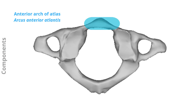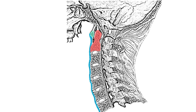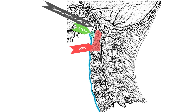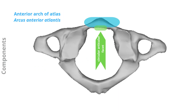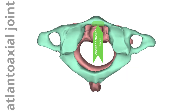Components — Anterior arch of atlas. The anterior portion of the atlas ring is formed by the anterior arch of the atlas. A bony ridge known as the anterior tubercle, which provides attachment to the anterior longitudinal ligament, is located on the anterior aspect of the arch. The atlantooccipital membrane and lateral portions of the anterior longitudinal ligament attach to the superior and inferior surfaces of the anterior arch. There is a circular articular facet that articulates with the dens of the axis, C2, to form the median atlantoaxial joint on the posterior surface of the anterior arch.